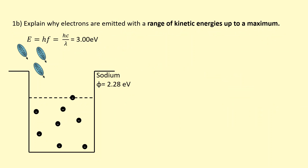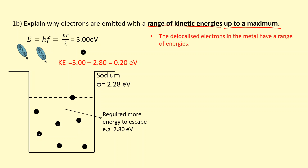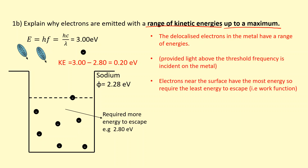In this question, we're asked to explain why electrons are emitted with a range of kinetic energies up to a certain maximum level. To answer this, we need to consider electrons deeper inside the metal. For example, this electron over here requires 2.80 electron volts — we're not just considering the electron near the surface which requires the minimum energy. When this electron absorbs the photon, it does escape, but escapes with less kinetic energy. Electrons inside the metal have a range of energies already, and the one near the surface has the most energy, so it requires the least energy to escape.